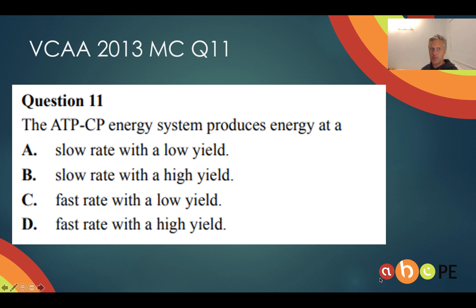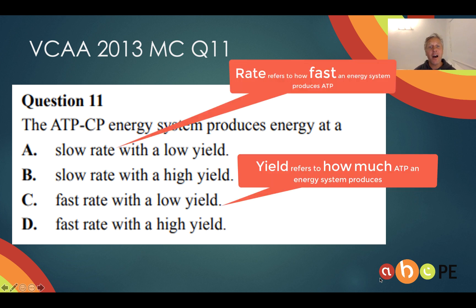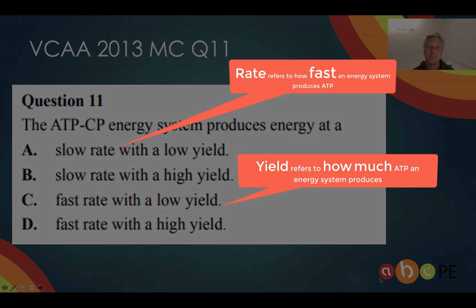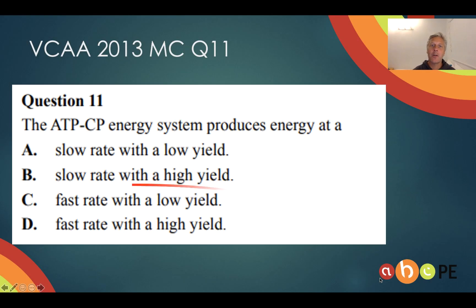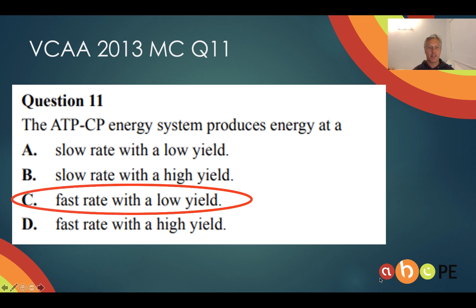Here's a VCAR question. You now have enough information to answer that — see how you go. Hopefully by looking at the slide, you came up with C: a very fast rate, but a very low yield.